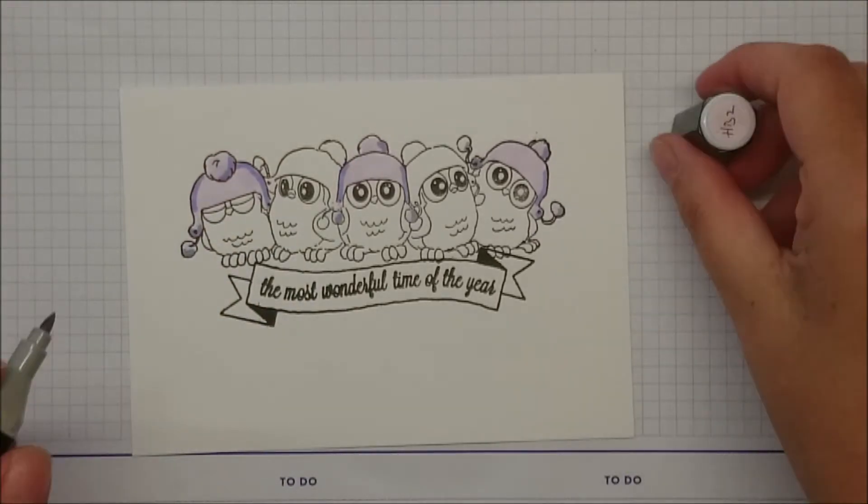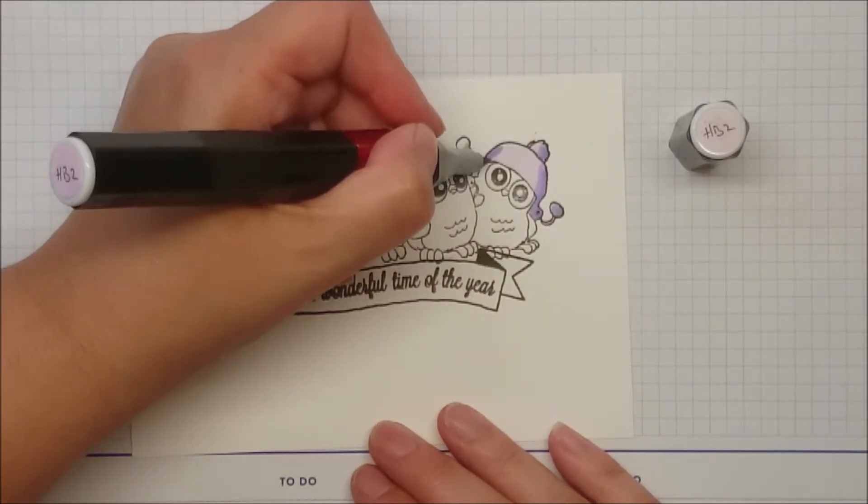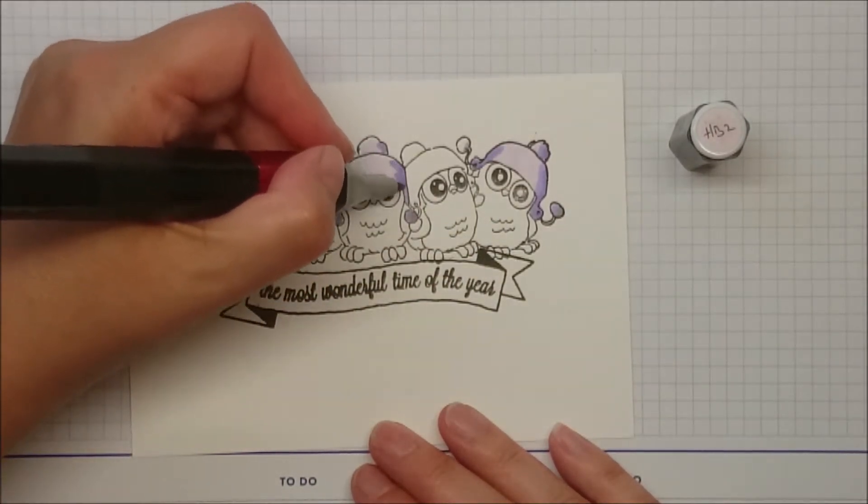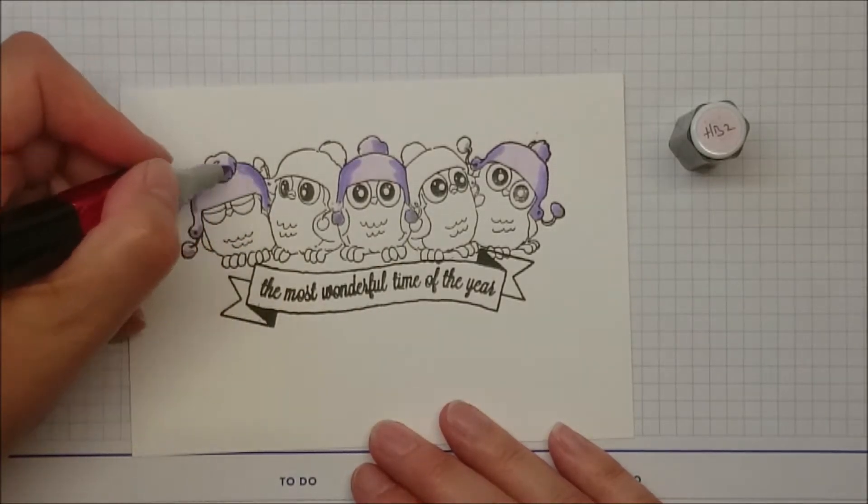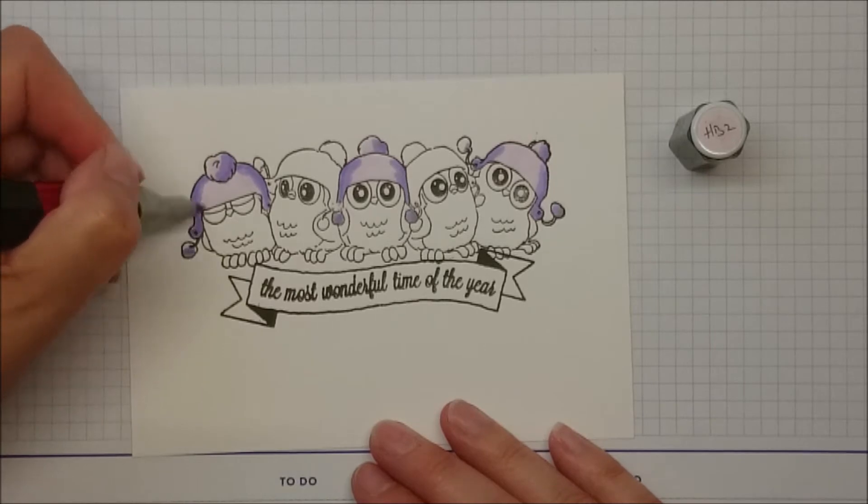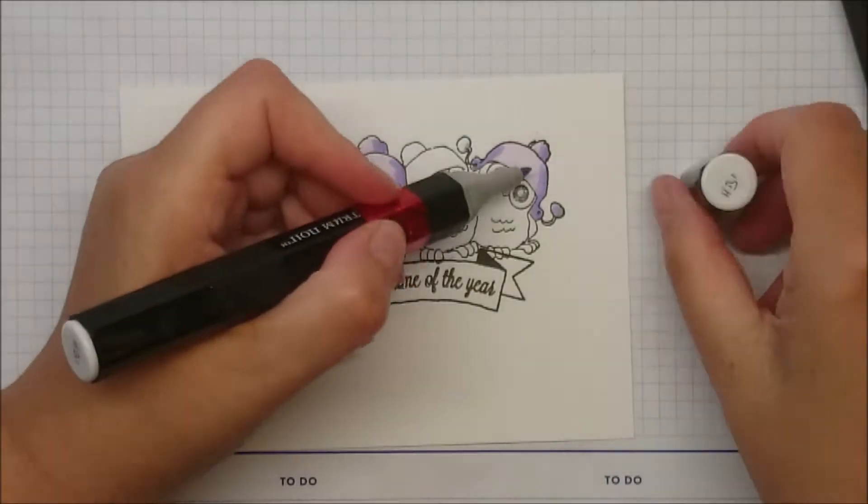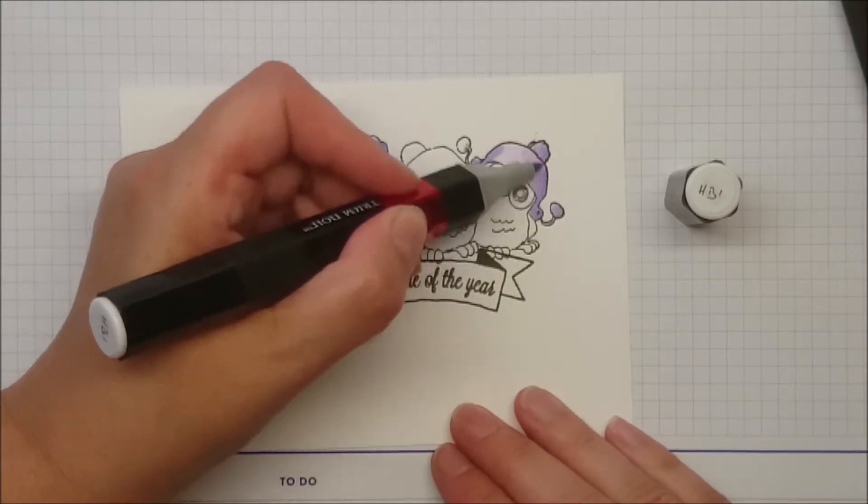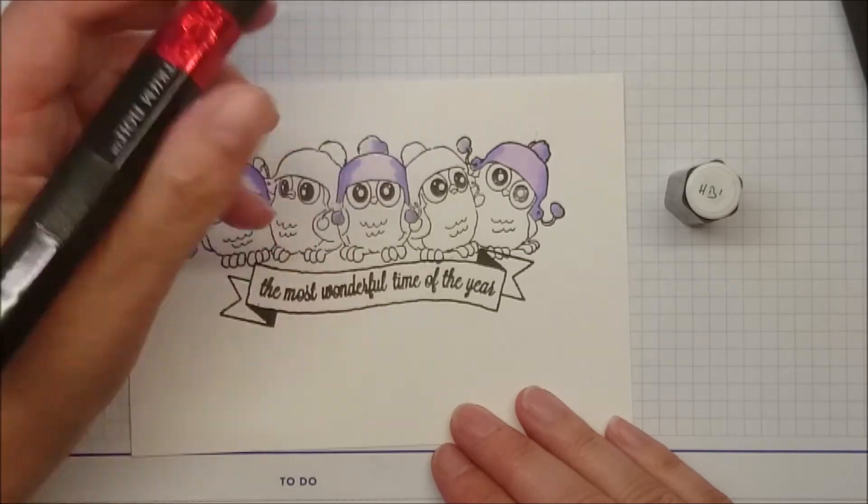So I'm fading out HB3 with HB2. And then you can see already that HB1 on the back is so much lighter. But I'm gonna first blend out two with one.